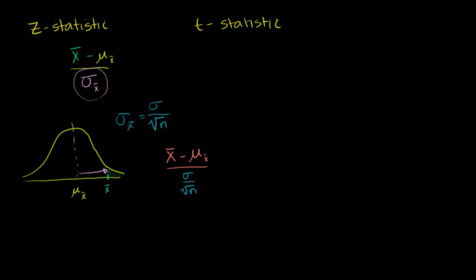This thing right here is a z-score. When we're dealing with an actual statistic derived from the sample mean, we call this a z-statistic. Then we can look it up in a z-table, or a normal distribution table, to find the probability of getting a value of this z or greater — giving us the probability of getting that extreme of a result.